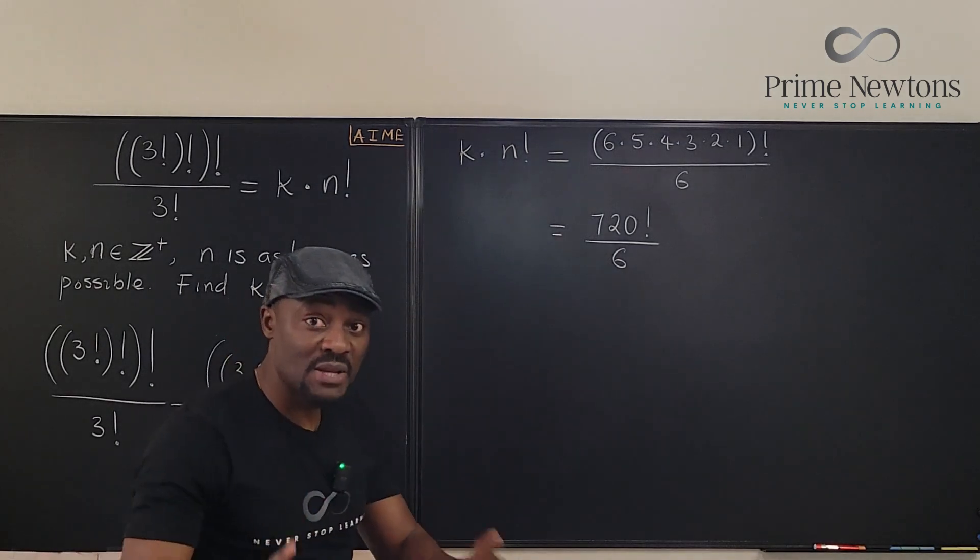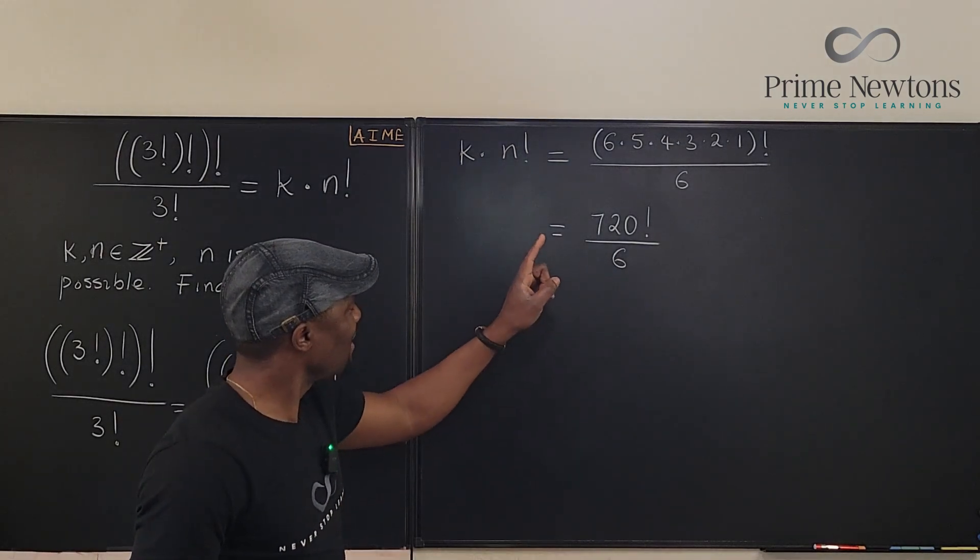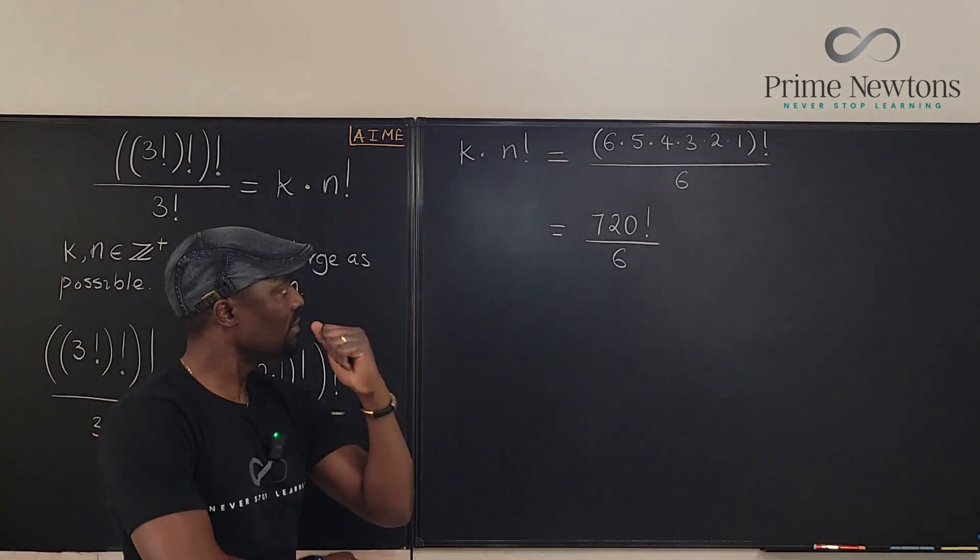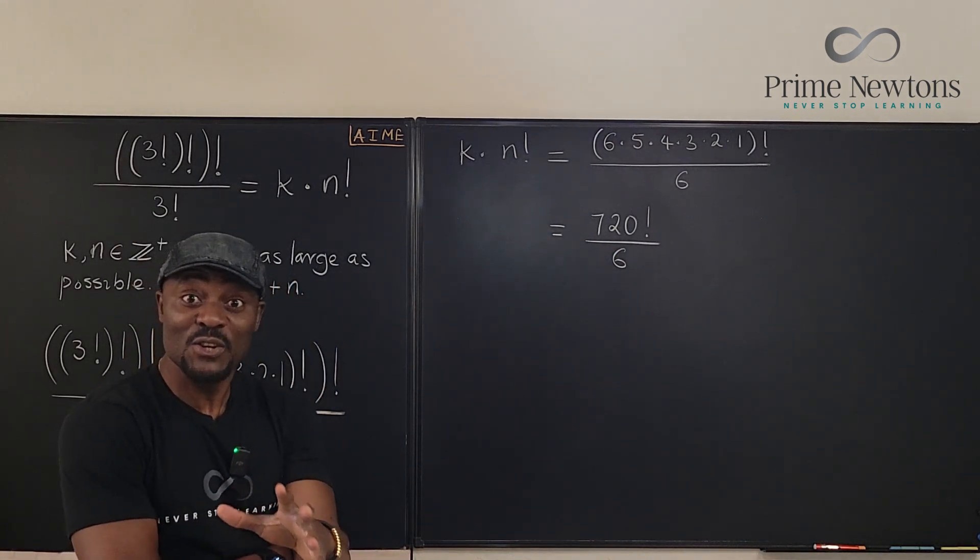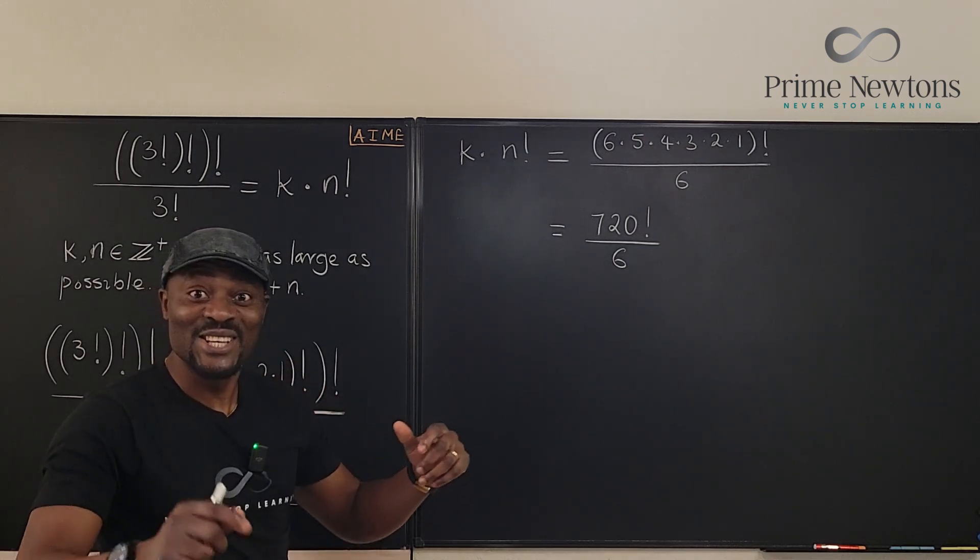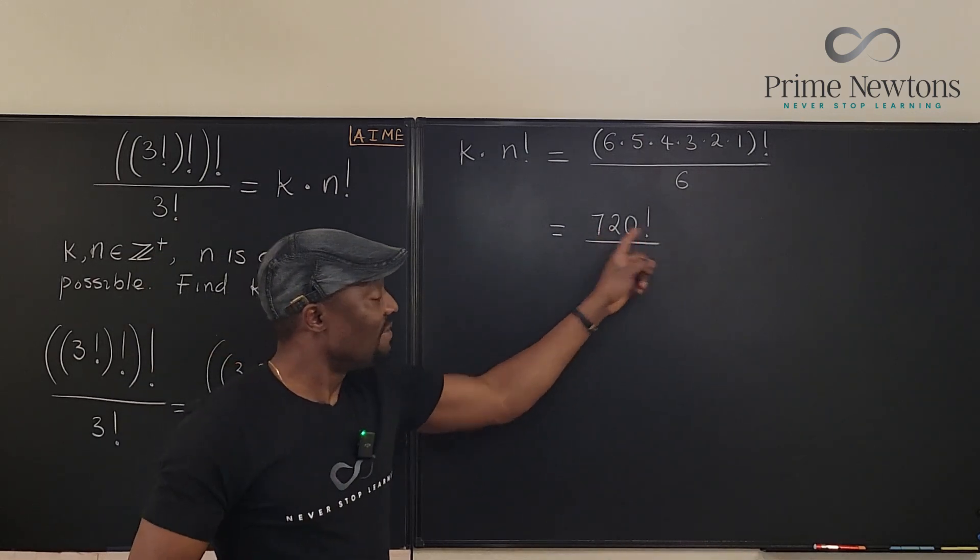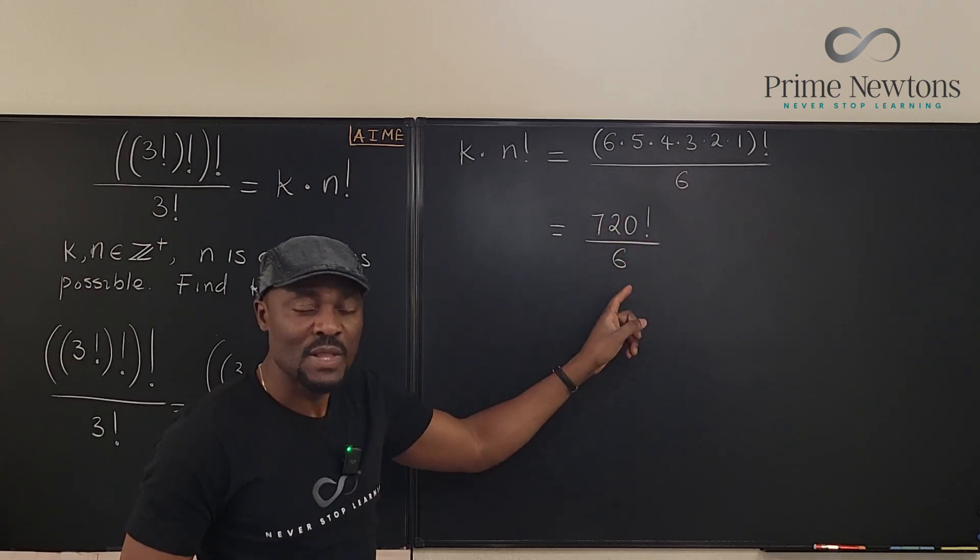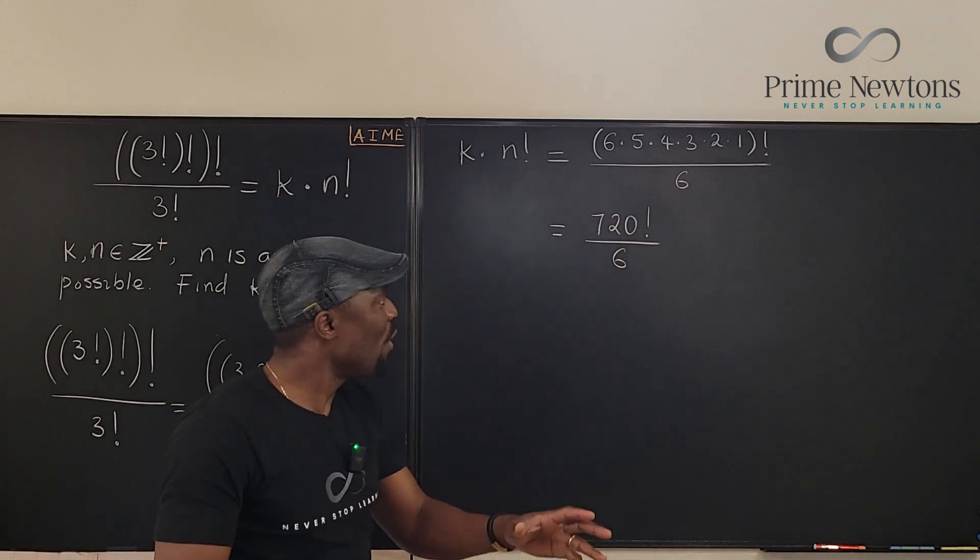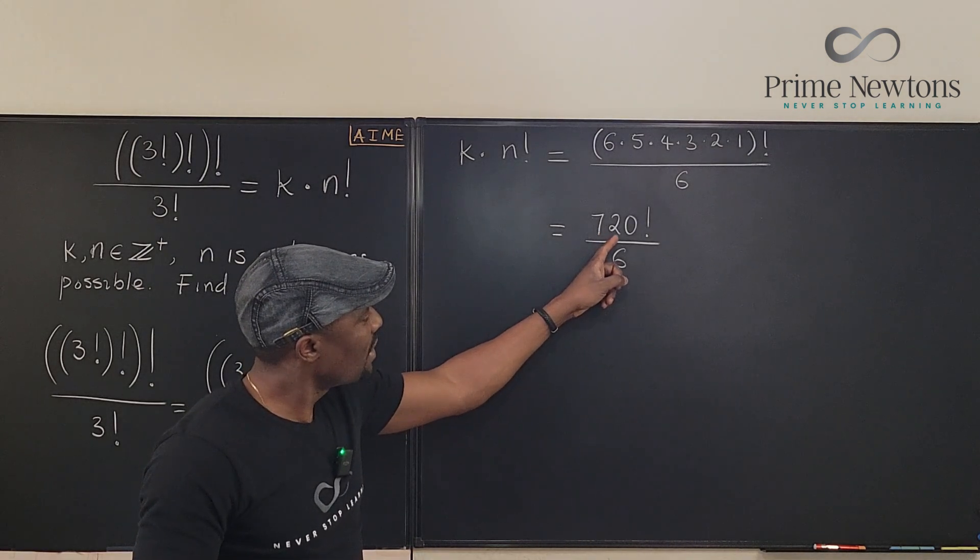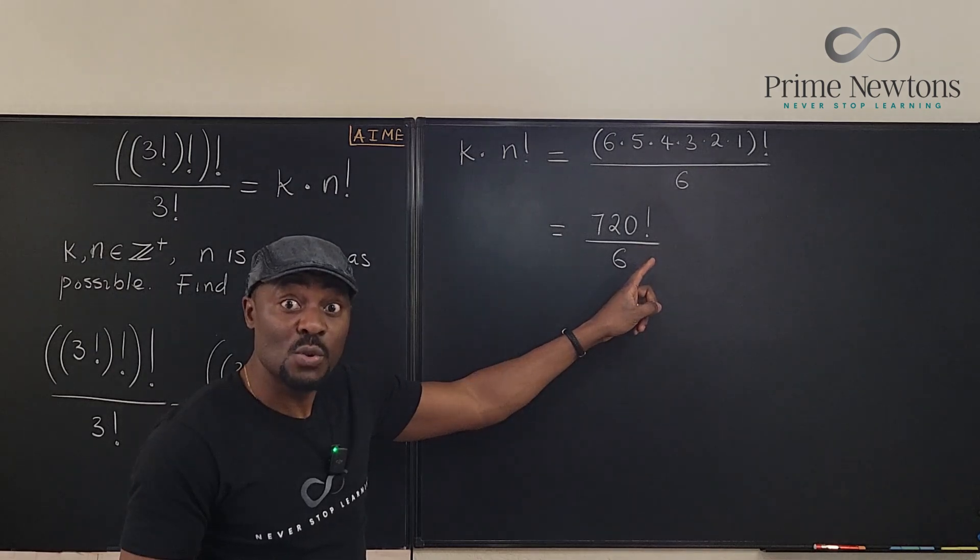Now, remember the mission is to write this in this form. And this is where there could be trouble. Because you cannot divide because of this factorial. You still cannot divide. So what you should do to... What you can do for yourself is to say, okay, this is 720 factorial.